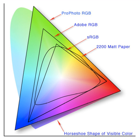Early color spaces had two components. They largely ignored blue light because the added complexity of a three-component process provided only a marginal increase in fidelity when compared to the jump from monochrome to two-component color. Examples include RG for early Technicolor film and RGK for early color printing.